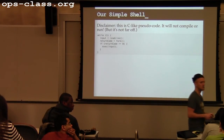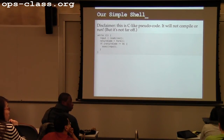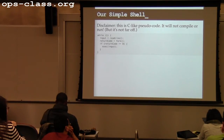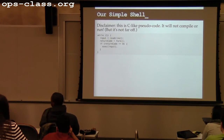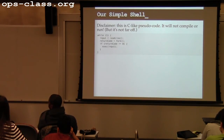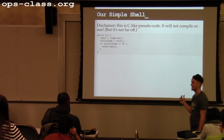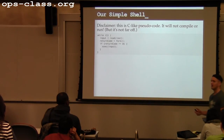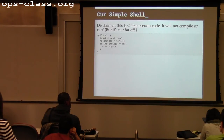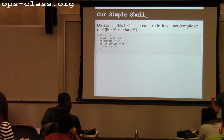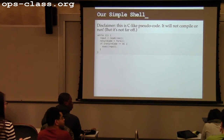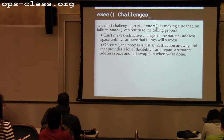A question: exec doesn't return — does that mean it doesn't have a return code, or doesn't return to the same code? Exec never returns a value on success because when you call exec, your memory is erased and there's no one to receive the return code. However, if exec fails, it does return. So exec does not return on success, but it does return on failure — and you'd normally have code in the child to handle exec failure. One of the harder parts of exec is making sure it can fail safely.